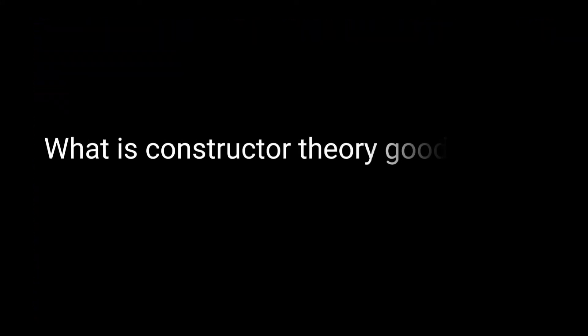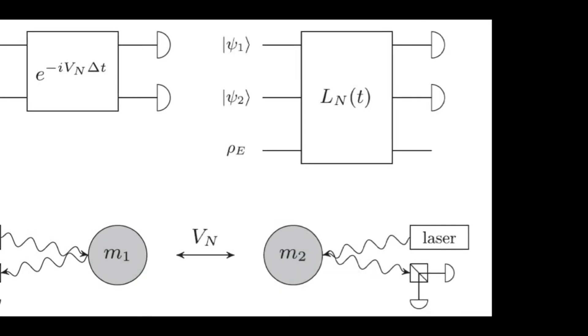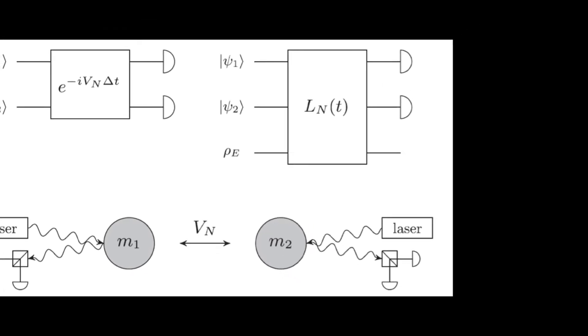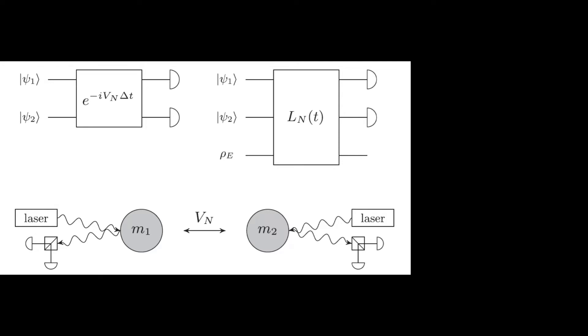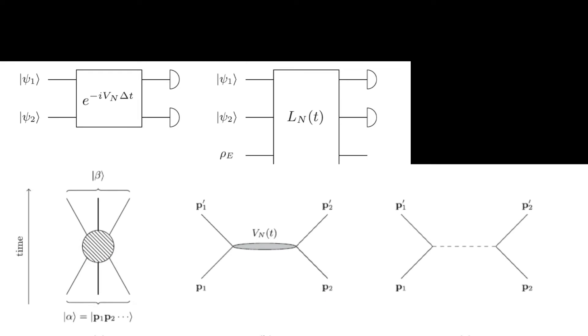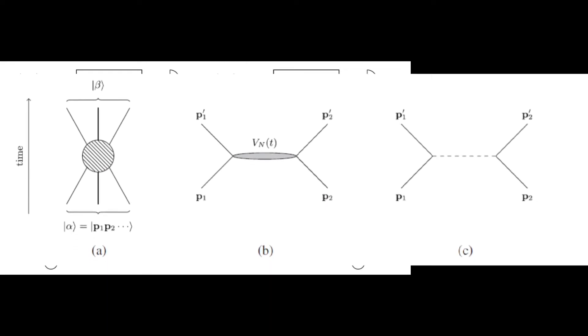In our example, a constructor could be a tiny robot rolling the dice. Constructor Theory should be able to tell us more than what dynamical theories predict. We still don't have a theory of quantum gravity — in particular, we don't know if gravity has a quantum nature, and we don't have any good dynamical theories to explain it. Constructor Theory might fortunately come to the rescue.